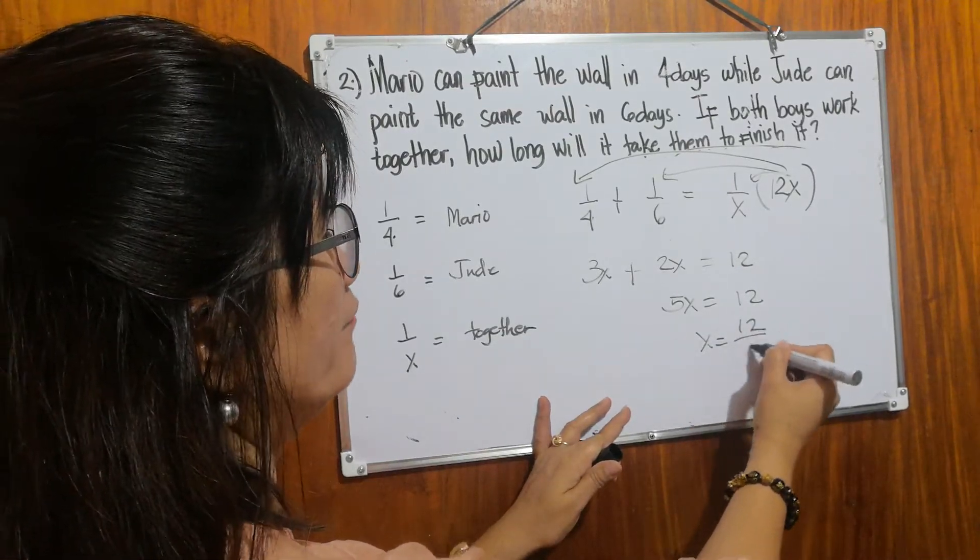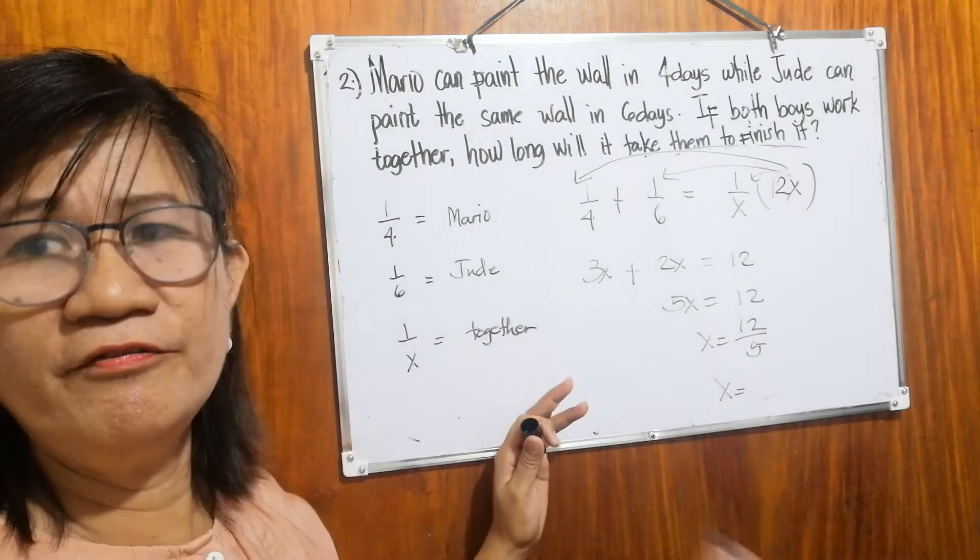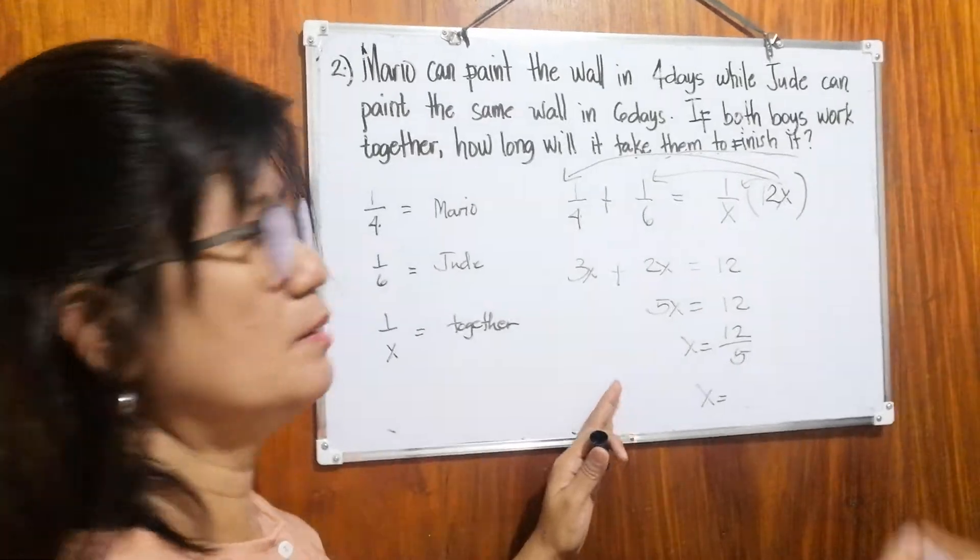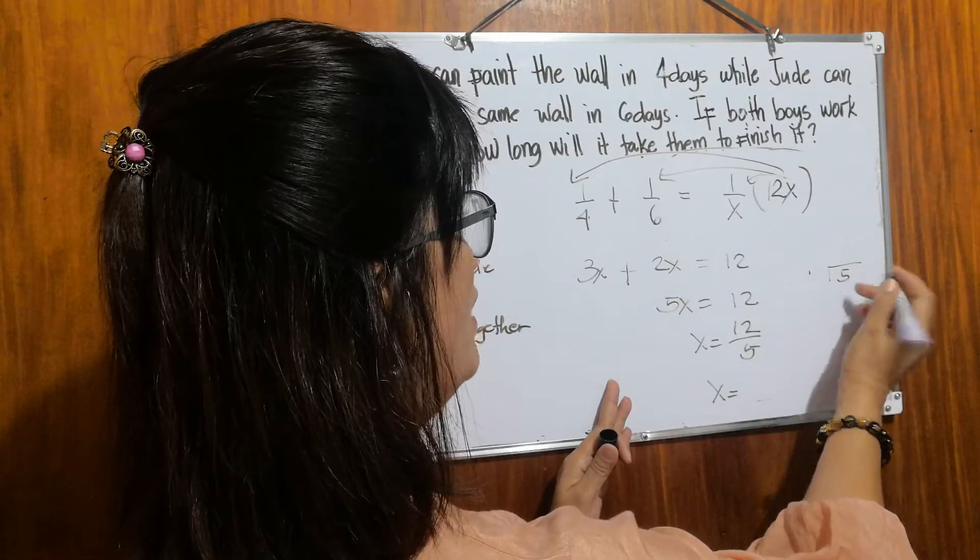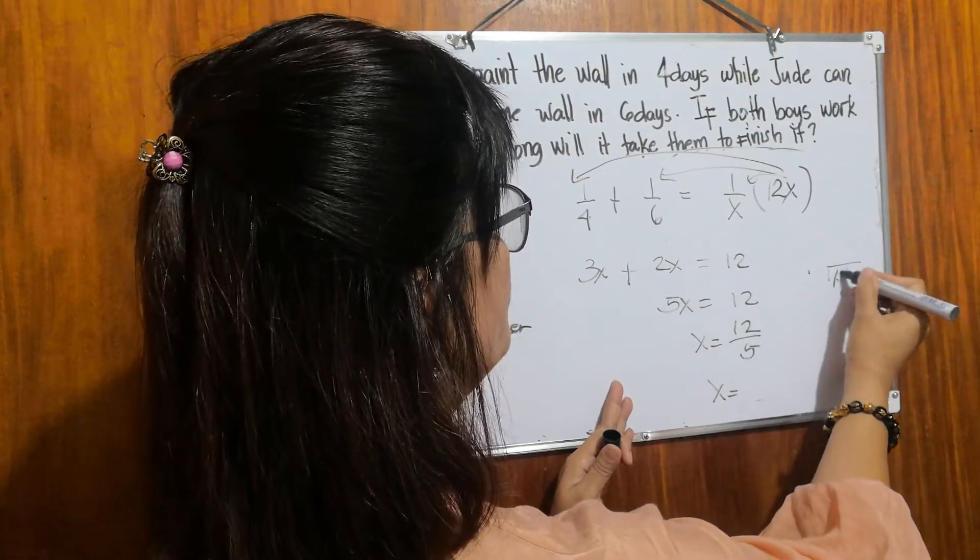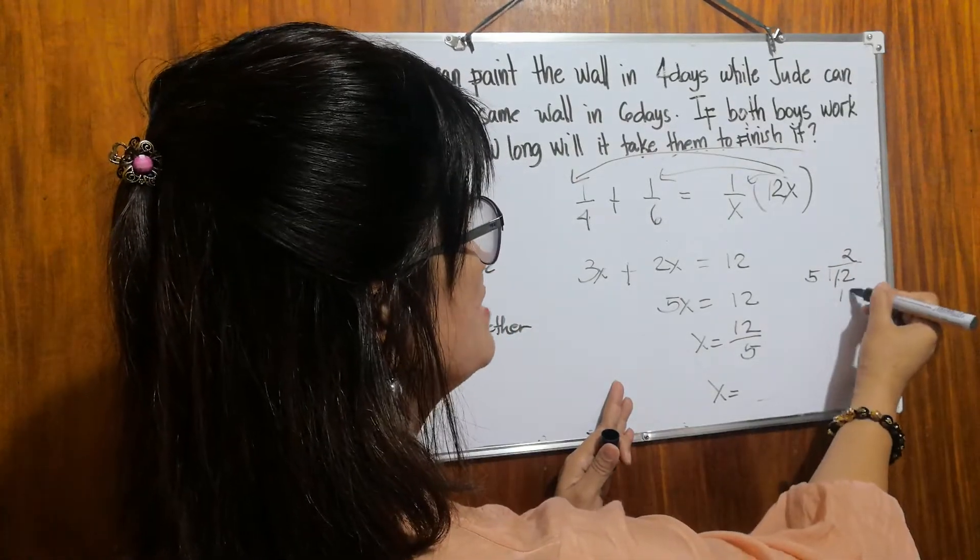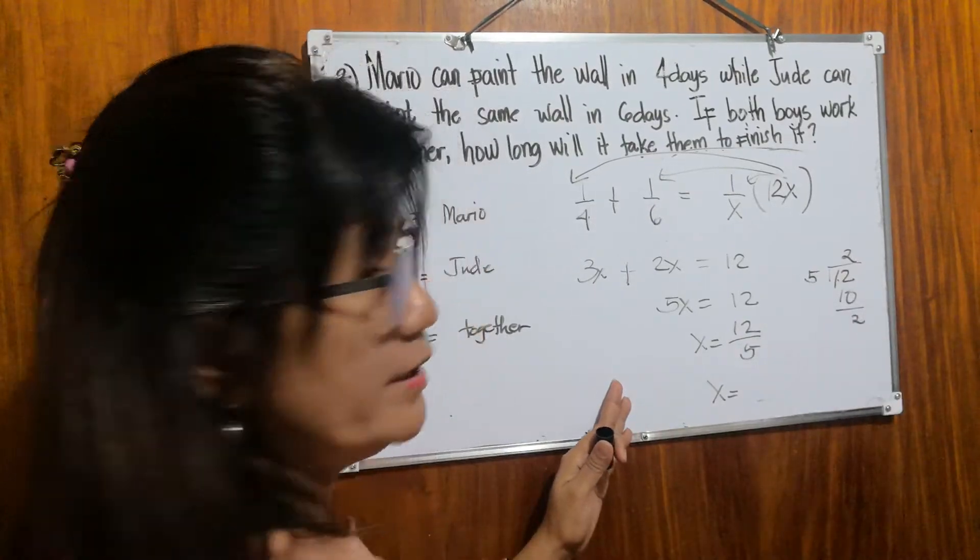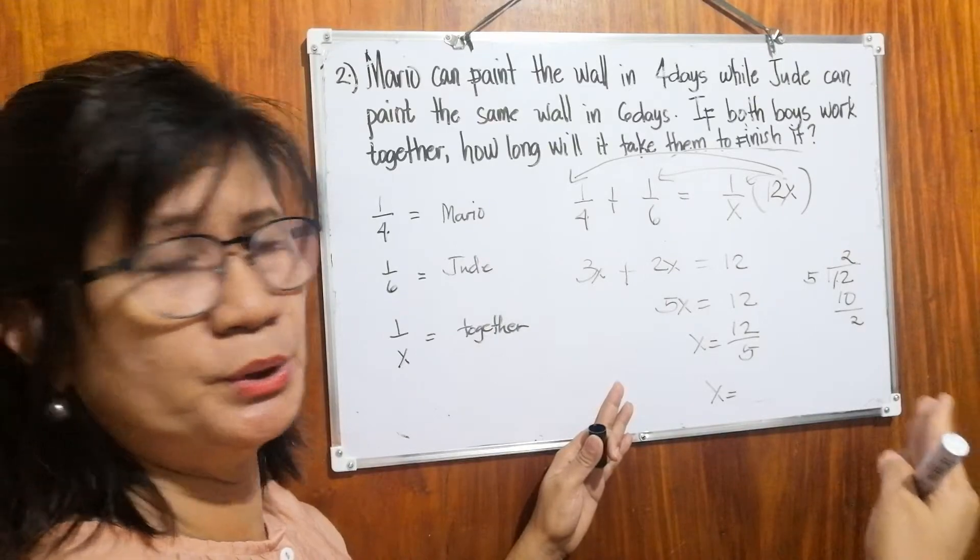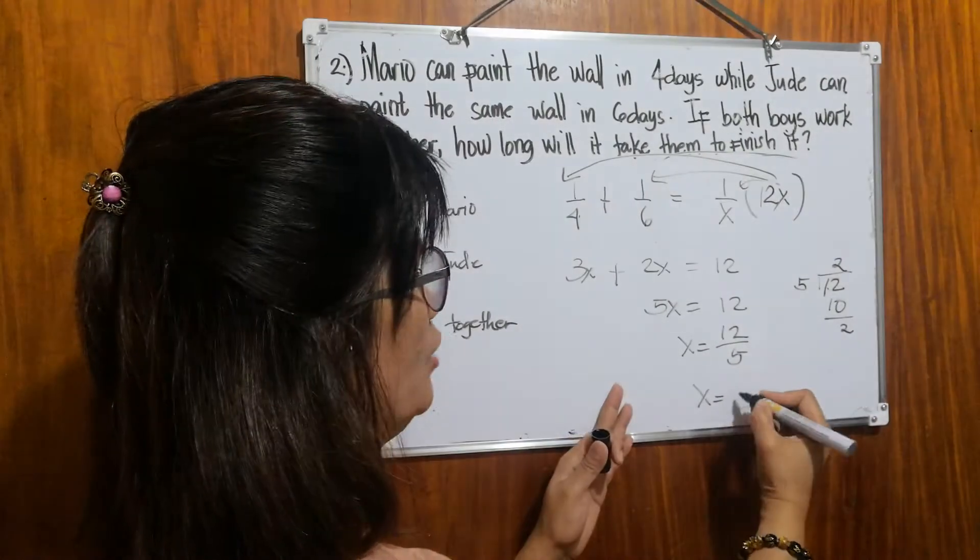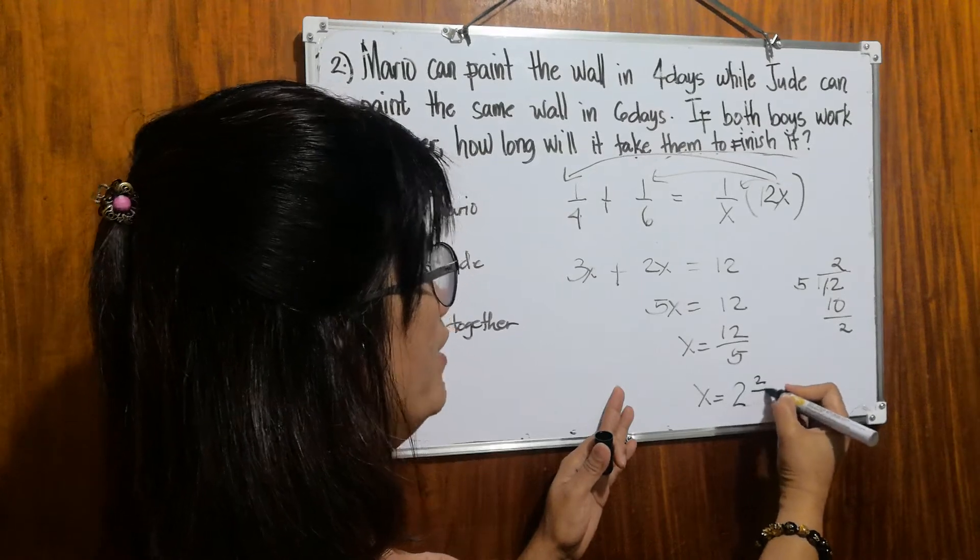To find x, we're going to divide 12 by five. So what is x? How many fives in 12? Let's divide. Five divided by, sorry, 12 divided by five equals two. Two times five is ten. The remainder is two. Therefore, if Mario and Jude work together, it will only last for two days and two over fifth.